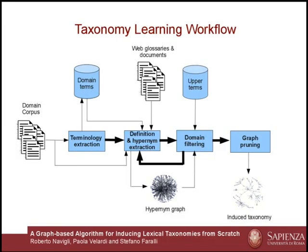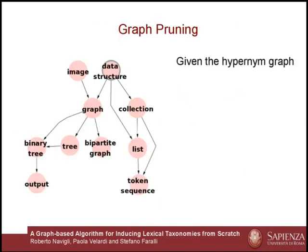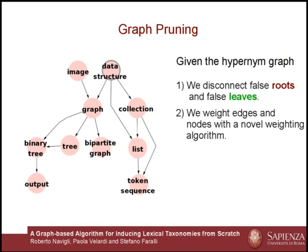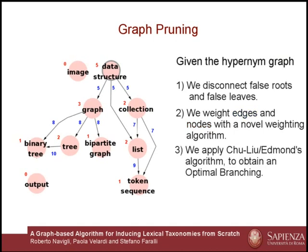To avoid cycles and disconnected components, we apply a graph pruning phase. Given the hyponym graph, we first disconnect false roots — nodes not in the upper terms set and with no incoming edge — and false leaves — nodes not in the initial terminology with no outgoing edge. Then we weight edges and nodes using a novel weighting algorithm. The aim is to keep those edges which can reach the highest number of leaves, while maintaining the depth of the taxonomy graph as close to the maximum as possible. Guided by the resulting weights, we apply the Chu-Liu-Edmonds algorithm to obtain an optimal branching of the noisy hyponym graph.